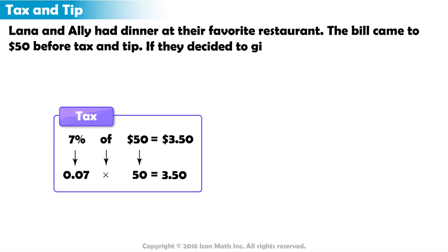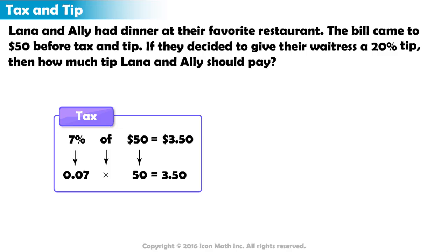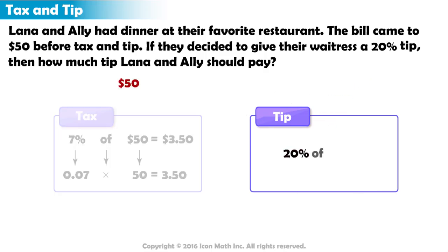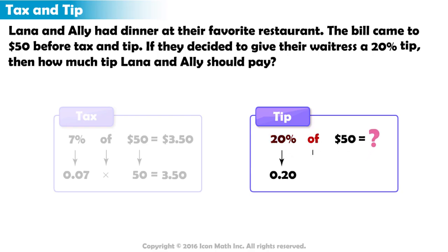Now, if Lana and Allie decided to give their waitress a 20% tip, then how much tip should they pay? To calculate 20% of the $50 bill, we must calculate 20% of 50, or 20 hundredths multiplied by 50. 20 hundredths multiplied by 50 is 10. Lana and Allie are planning to leave their waitress a $10 tip.